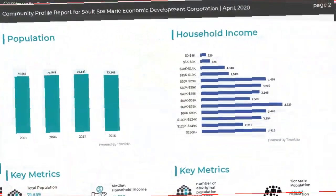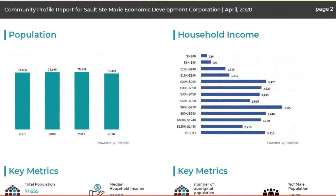Here we are at the profile of the community of Sault Ste. Marie, provided by Town Folio. As we can see, the population of the community rises to 73,368 inhabitants. When it comes to household income, Sault Ste. Marie has an average of $60,000 to $75,000. The majority of the population's household income is in this range, and we can see that there is a very good middle class in the community.